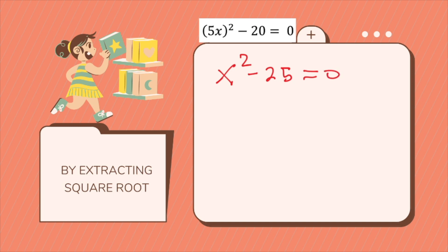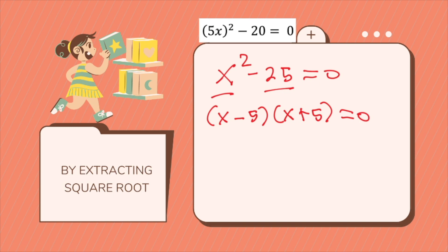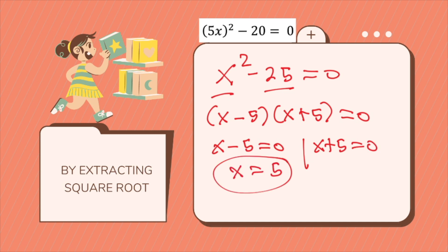Equals 0 could be solved by factoring the binomial on the left side of the equation and using the zero-factor theorem. So this will be x and 25, the root is 5, so x minus 5 times x plus 5 equals 0. That will give us x minus 5 equals 0 and x plus 5 equals 0, which is x equals 5 and x equals negative 5.